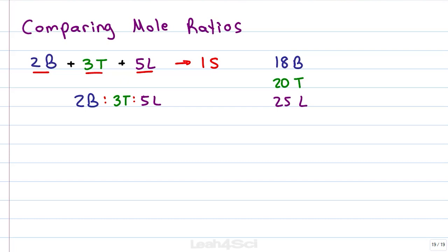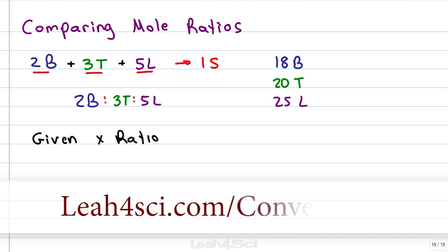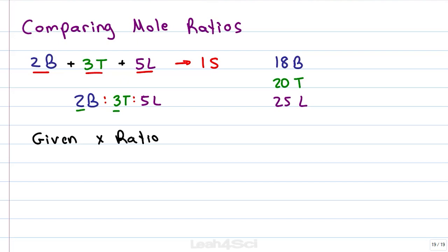Now I will check by comparing it to turkey. We'll use the given times ratio method which you can find on my website leah4sci.com/conversions or see the link below. Since we're comparing bread to turkey, we want to start with our given which is 18 slices of bread and then multiply that by the stoichiometric coefficients or the ratio between bread and turkey which in this case is 2 bread for every 3 turkey. I set up my ratio with 2 bread on the bottom and 3 turkey on top. This allows me to cancel bread and give me an answer in units of turkey.